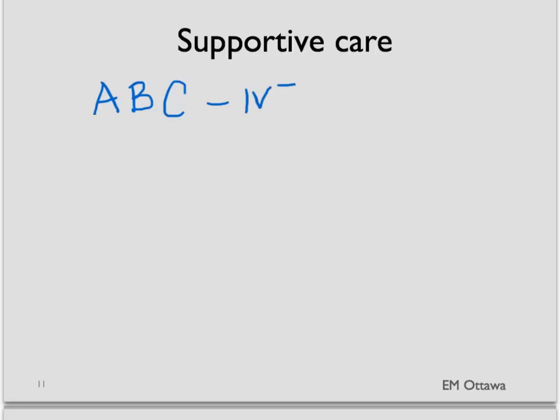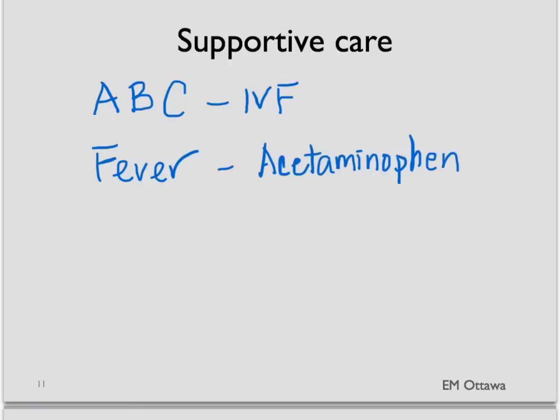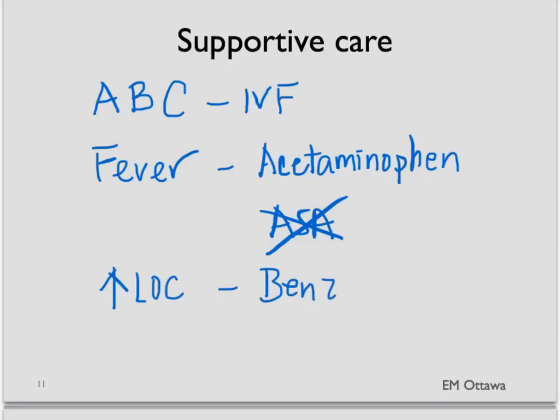In terms of supportive care, these are our usual ABCs. We make sure the airway is patent and intubate the patient if needed. We give 100% oxygen. For circulation, we give IV fluids to support low blood pressure. We treat fever by giving acetaminophen — we do not use aspirin in this case. For agitation and altered level of consciousness, we give benzodiazepines, which will also work for seizures.